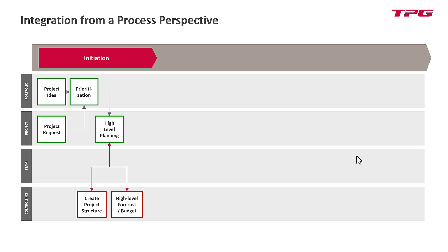A project structure is something that is needed. The project structure could start on the PPM side — the green one — and be transferred into the ERP system. That's exactly what we're going to show later in the live demo. Or it could start on the ERP side in controlling, where they define a project structure and hand it over to project management, asking project managers to do high-level planning against this cost breakdown structure — which is really what controllers usually think.